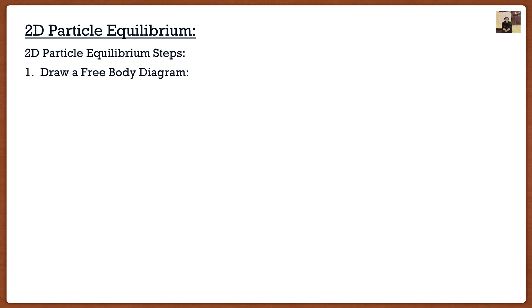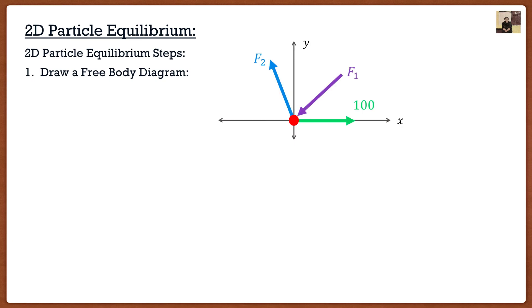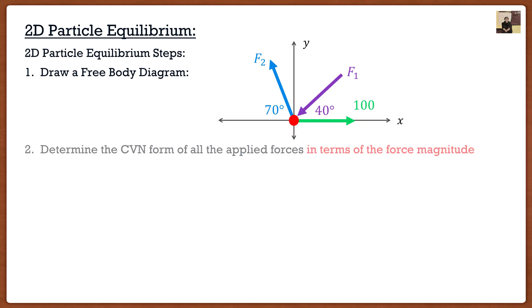The first step is always going to be: draw a free body diagram. I hinted at this last video. You always want to draw a free body diagram. So let's say we have a 2D case with three forces acting on it. The first step is draw all the forces. In this particular case, I have 100 units of force going to the right and two unknown forces F1 and F2. The second step is draw out any dimensions. The beauty of particle equilibrium is everything acts at the same point, so you'll never have length dimensions — only angle dimensions. Here, F1 acts at 40 degrees and F2 acts at 70 degrees.